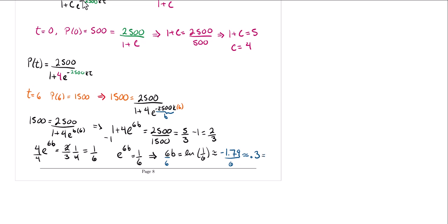Since b equals negative 2,500·k, we have the coefficient we need. Rather than solving for K separately, we can write our formula directly as P(t) = 2,500 divided by 1 plus 4 times e to the negative 0.3t. This is the equation modeling the fish population for this problem.